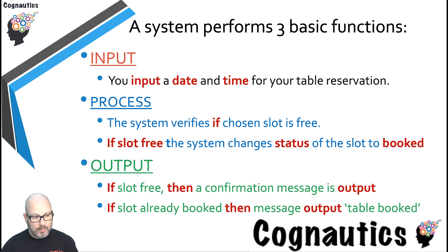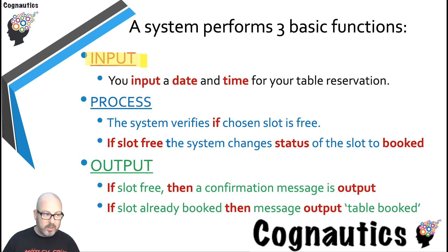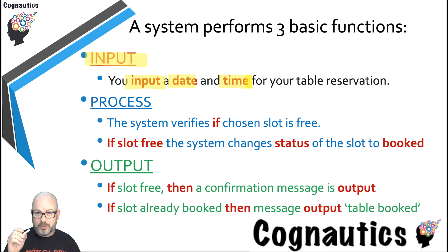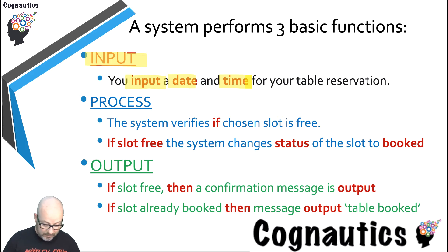Let's take an example moving away from computer science and thinking about something you've probably done, or your parents have done in the last couple of weeks: you need to book a table. When you go onto the Pizza Express website and you want to book a table, you input — keyword — a date and a time. So you've gone onto the website, put in the date and 19:30 because you want to eat at half seven at night. You press enter. Then the system does some work — the system does some processing.